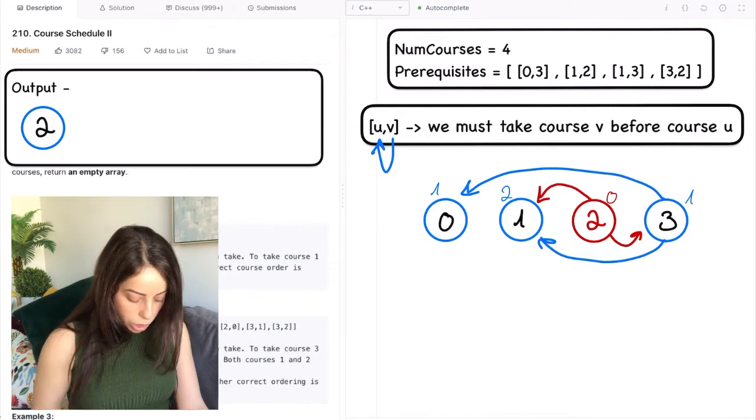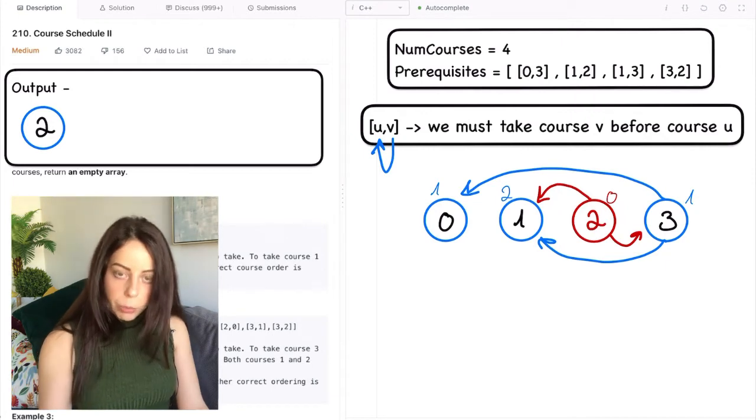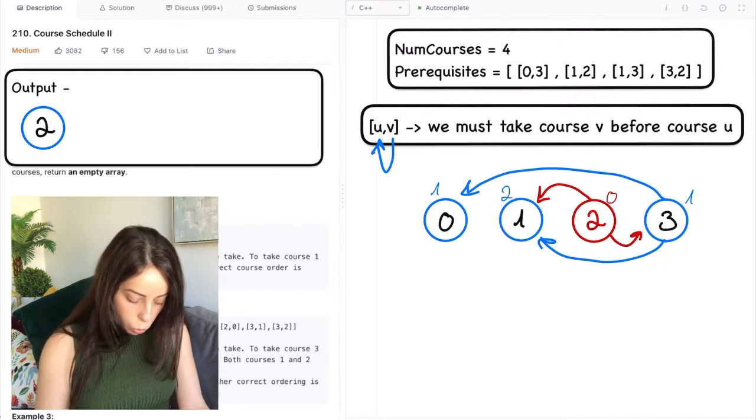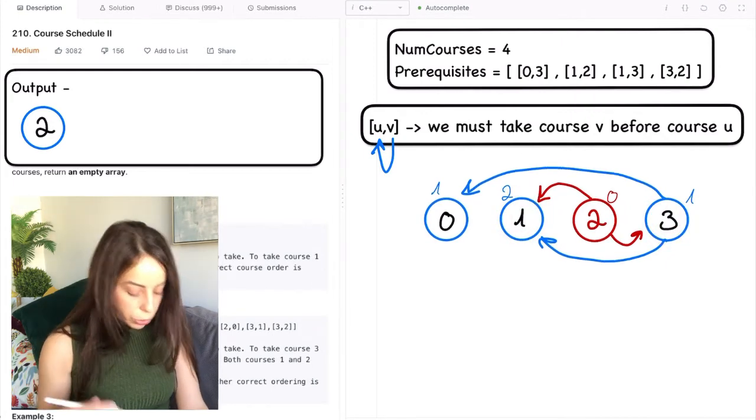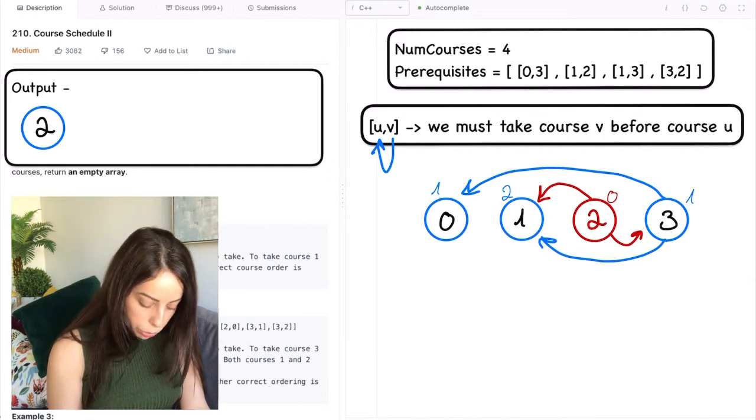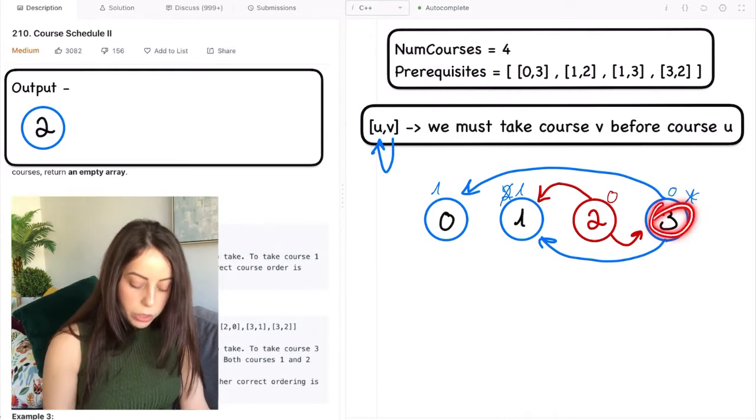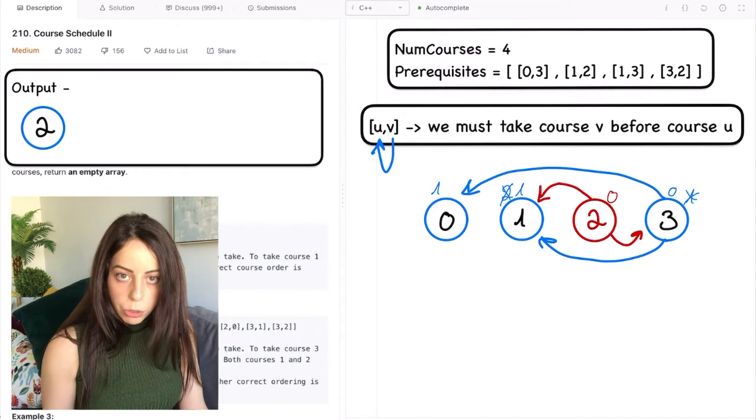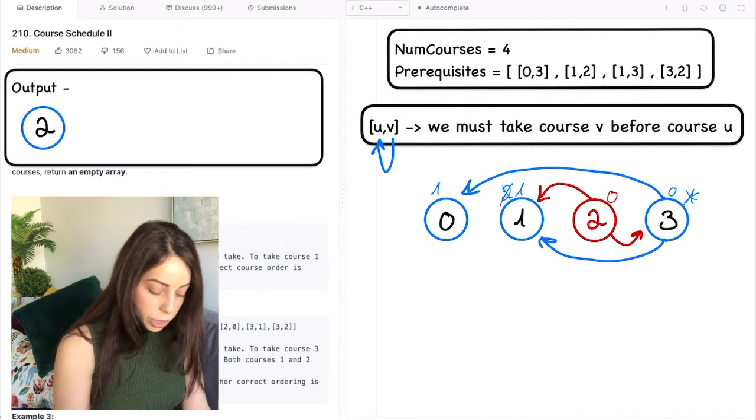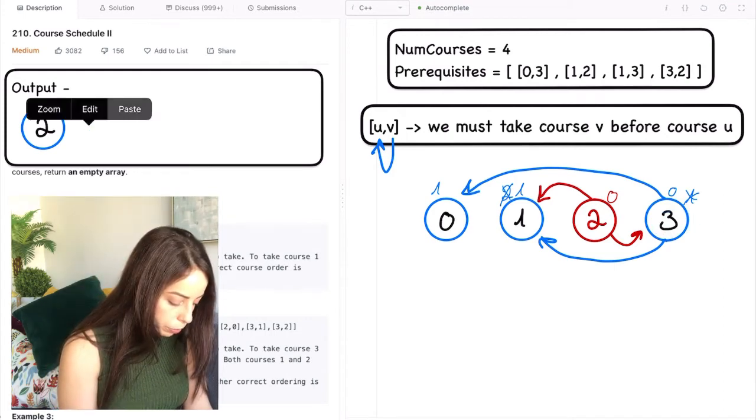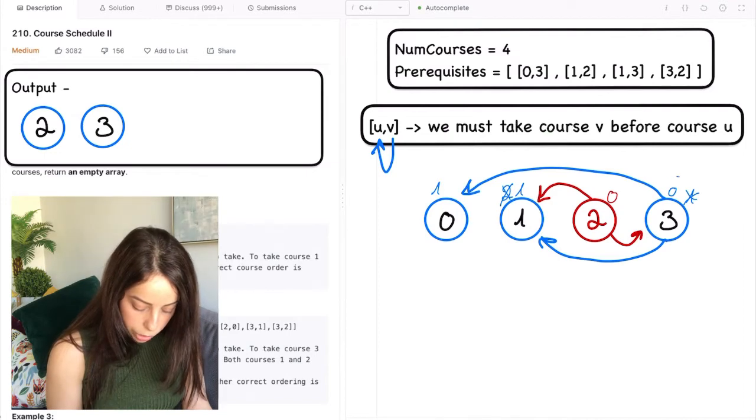So now back to our example. We just removed node 2. And now we want to look at the neighbors of node 2 which are 1 and 3. Okay, so the in degree of node 1 has dropped from 2 to 1. The in degree of node 3 has dropped from 1 to 0. So course 3 has 0 unfinished prerequisites and we can take it. So we do. We add it to our schedule and we remove it from the graph.